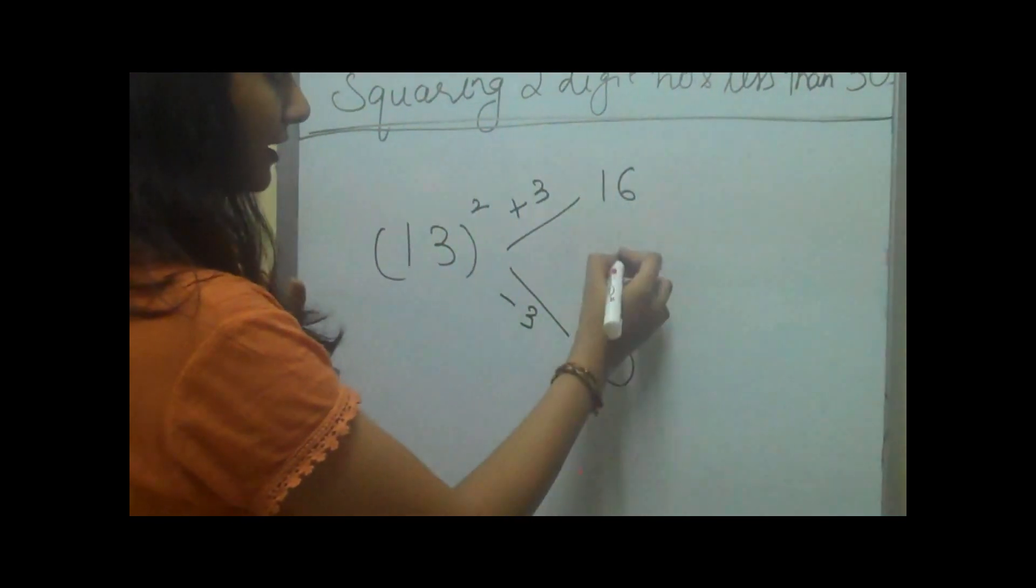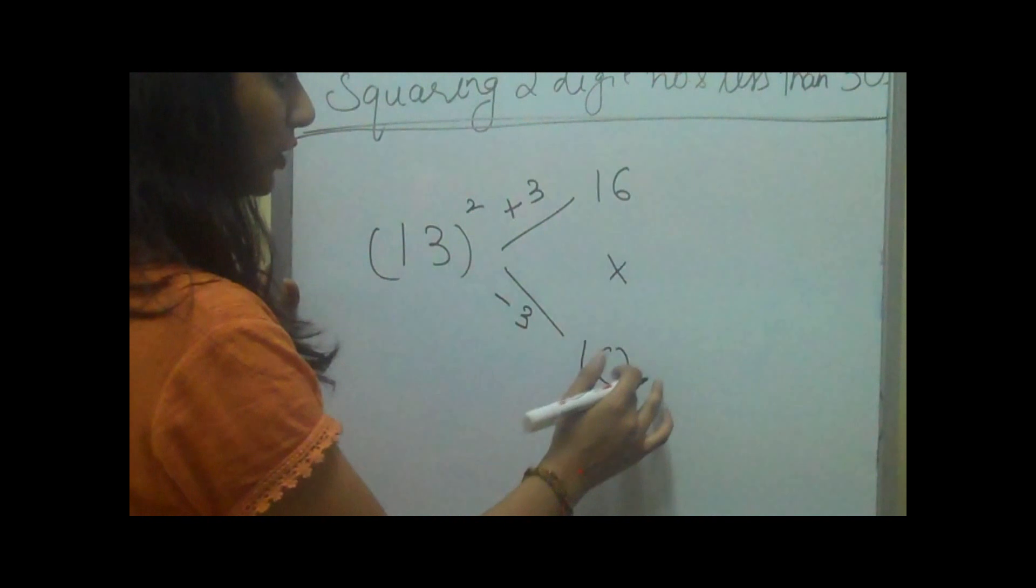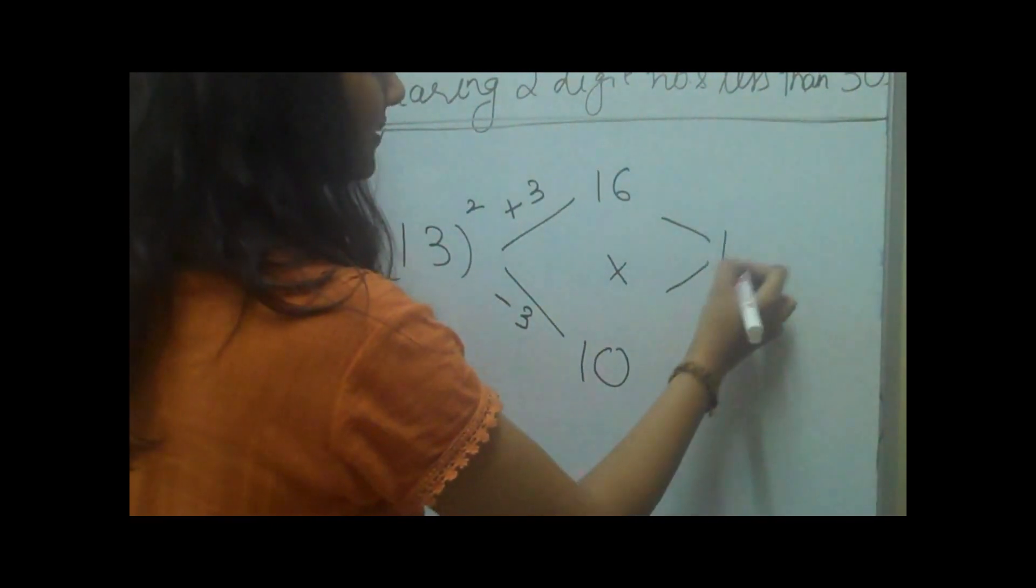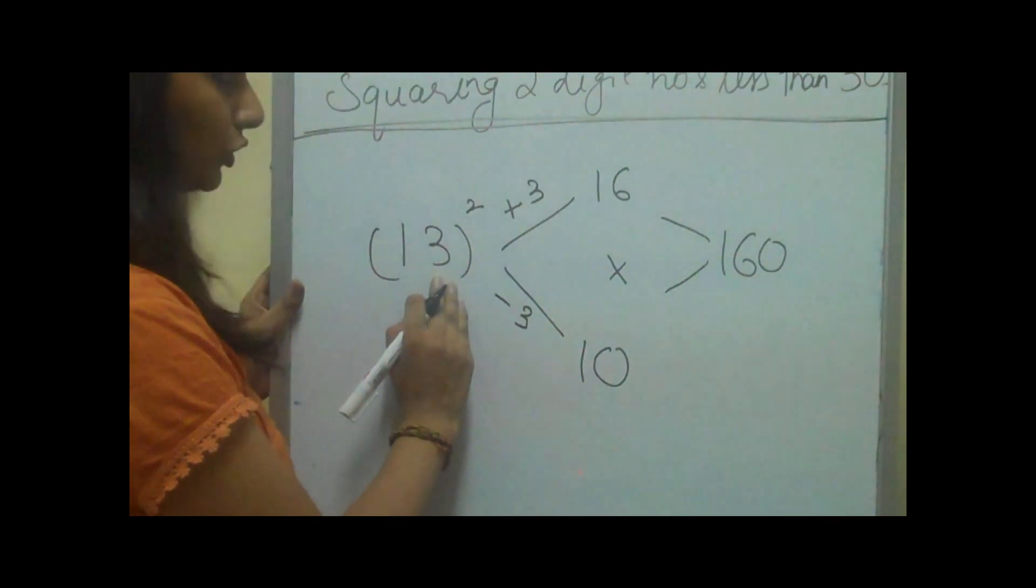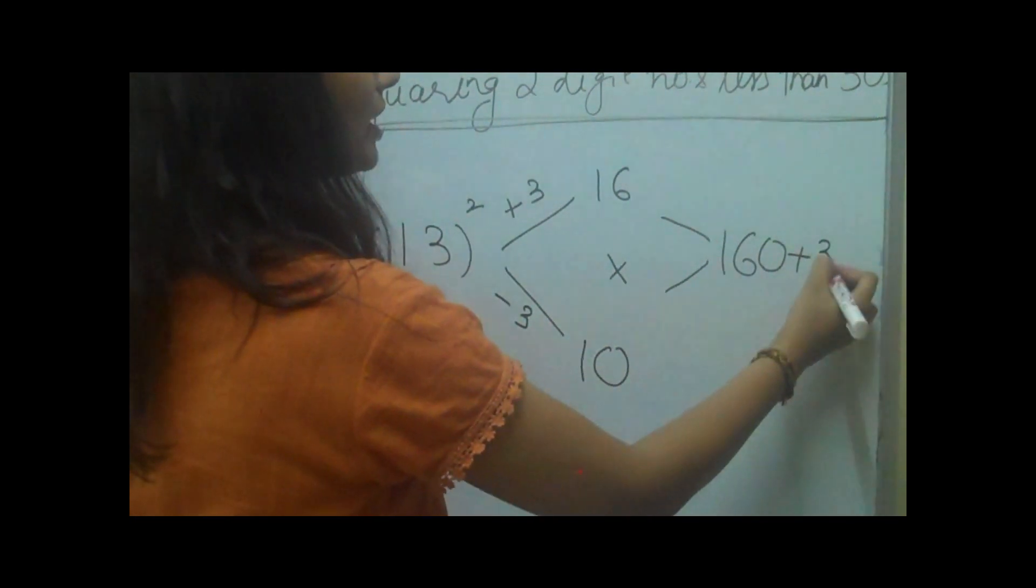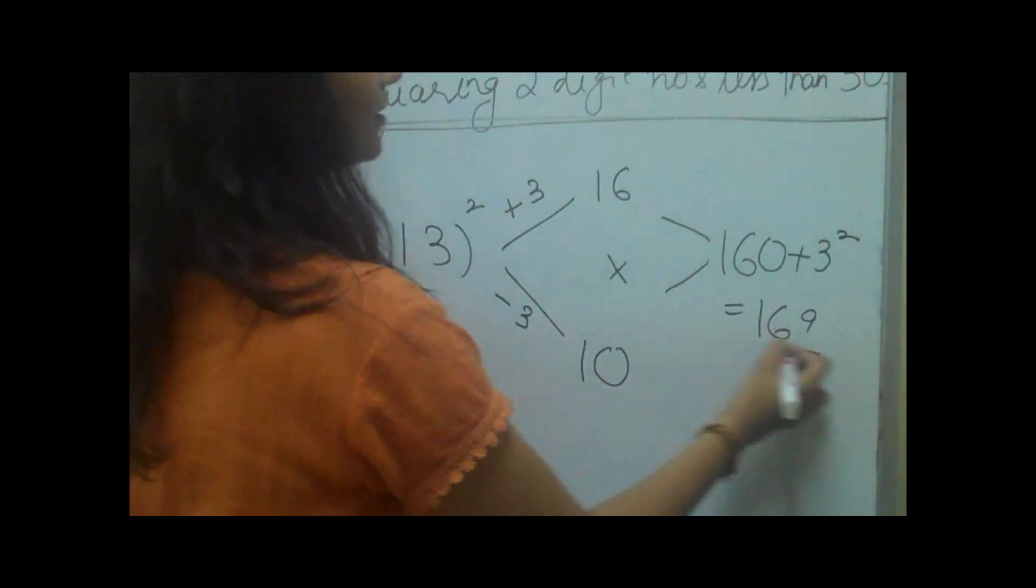Then we'll multiply these two numbers. 16 times 10 makes 160, and then we'll add the square of 3, which makes 169 as the answer.